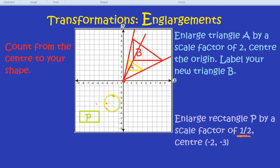Finally the bottom left-hand corner, five down, seven. Half of five and seven is two and a half and three and a half. And there is our new rectangle enlarged by a scale factor of a half.